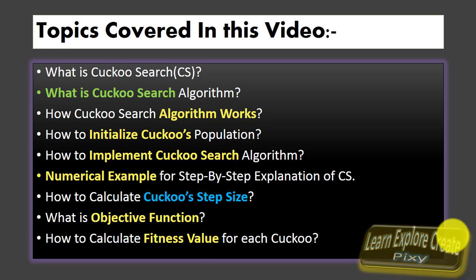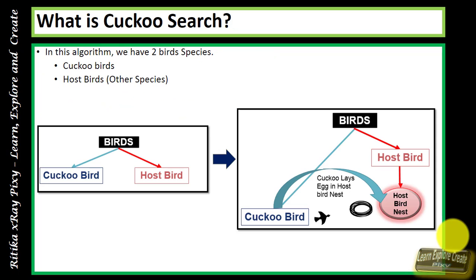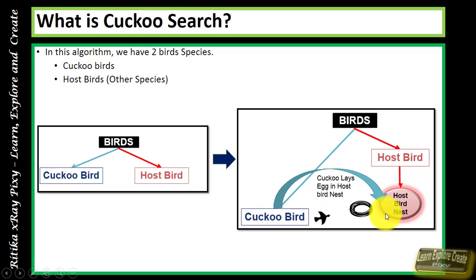The cuckoo search algorithm is a meta-heuristic algorithm inspired by some species of cuckoos and their behavior of laying their eggs in the nests of other species. This behavior increases their survival and population. In this algorithm we have two species: the cuckoo bird and the host bird. The cuckoo bird does not have its own nest, so it lays its egg in the nest of the host bird.